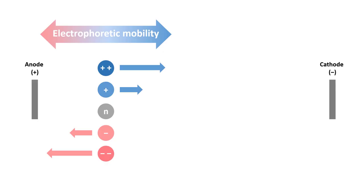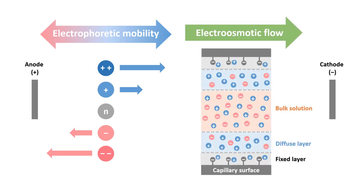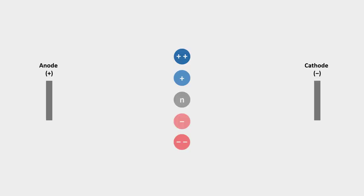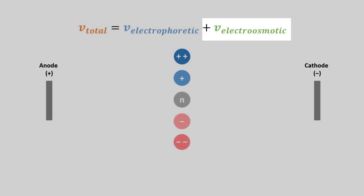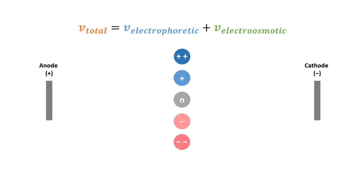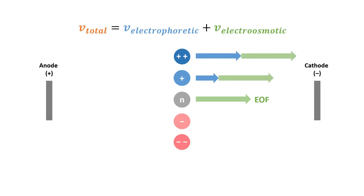Now that we have learned about both electrophoretic mobility and electroosmotic flow, it's time to combine them together. The total velocity of a solute is equal to the sum of the electrophoretic velocity and the electroosmotic velocity. For neutral species, their total velocity is equal to the electroosmotic velocity. For cations, we can find the total velocity simply by adding the electrophoretic velocity and the electroosmotic velocity together.